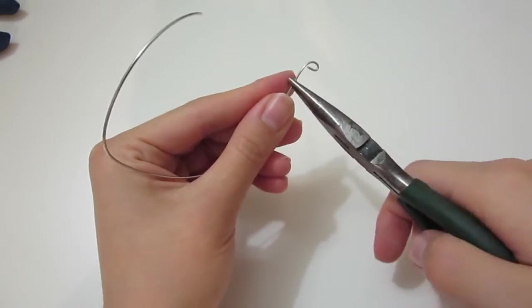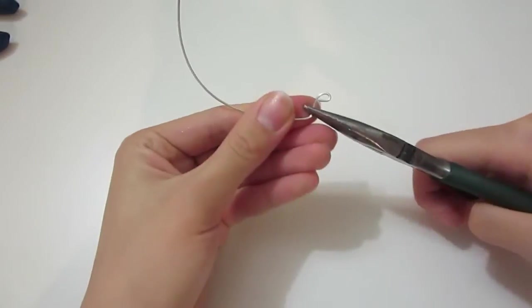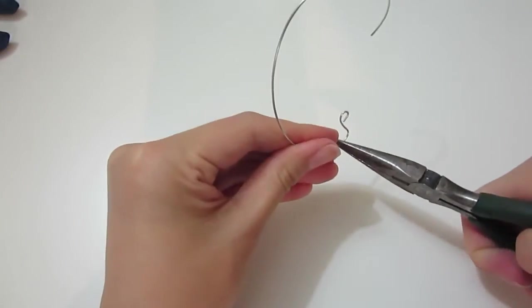Then place the plier around one centimeter away from the cup holder and bend to 90 degrees to start forming the shape of the cup.